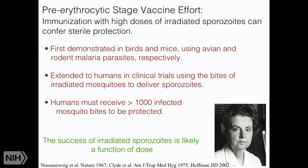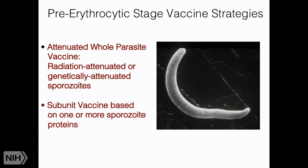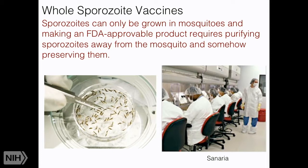There are two approaches going on right now. One is to use a whole parasite vaccine attenuated either by radiation or genetically — altering genes in those parasites so they can't get through the liver. Or we can look at what is the basis of immunity when people are immunized with sporozoites and make a subunit vaccine based on those few proteins. The whole parasite vaccine is a great idea because we know that works — that was our proof of concept — but the problem is that sporozoites cannot be grown in vitro; they can only be grown in mosquitoes.